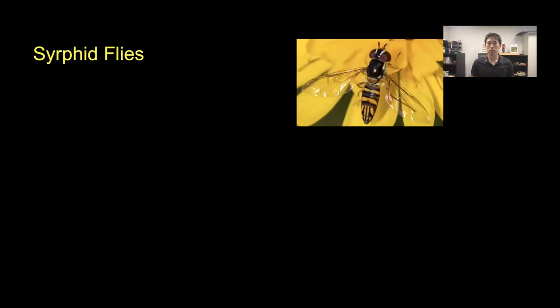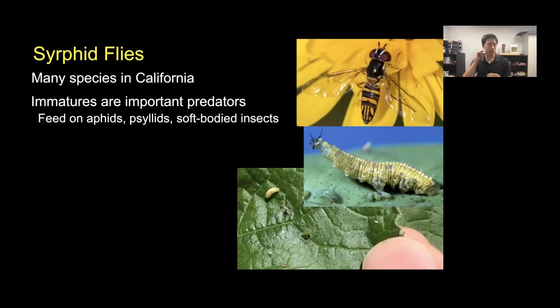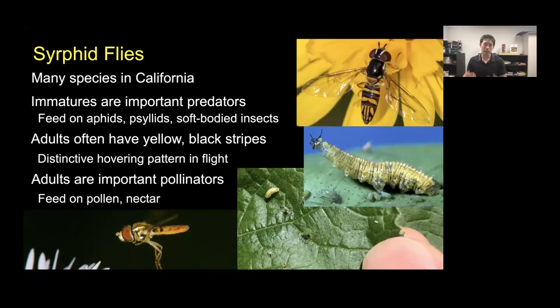Syrphid flies—also known as hoverflies—have many species in California. Only the larvae are predators; they're small green worm-like creatures that feed on aphids, psyllids, and soft-bodied insects. Adults have distinctive yellow-black stripes on their abdomen resembling bees, and a characteristic hovering flight pattern. Syrphid flies offer a double benefit: their larvae control pests while the adults are important pollinators, feeding on pollen and nectar as they move from flower to flower.